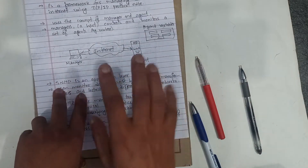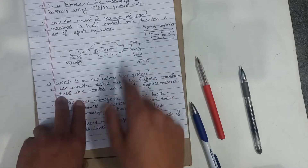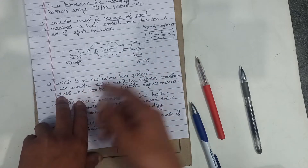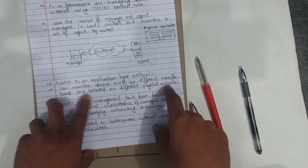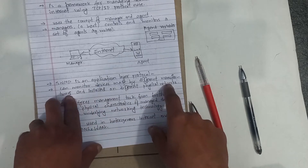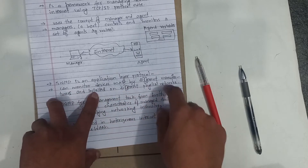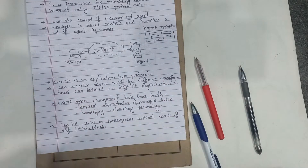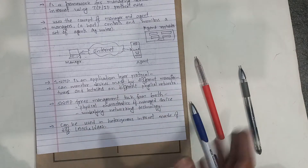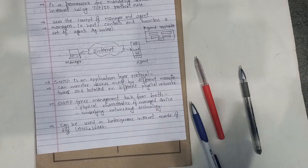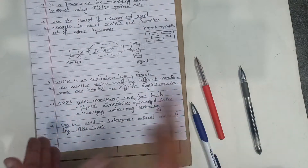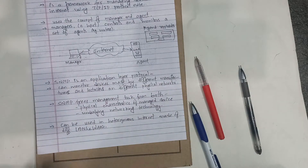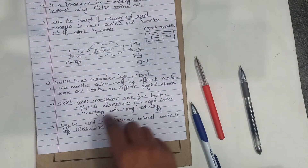SNMP is an application layer protocol, made by different manufacturers and installed on different physical networks. You can use it, install it, monitor it, and manage it using the application layer protocol.